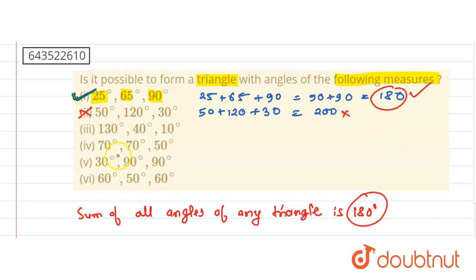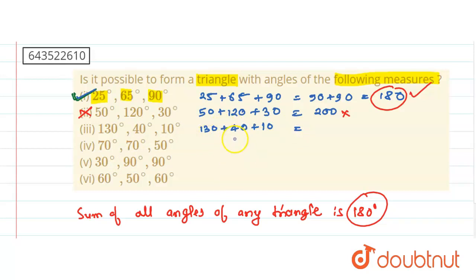Now let us come to the third case: 130 plus 40 plus 10. 130 plus 40 is 170, plus 10 is 180. So it is possible to form a triangle with these three angles.